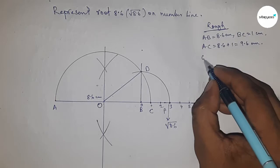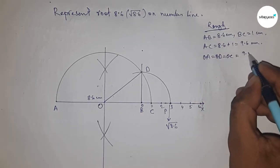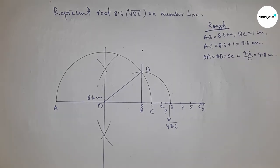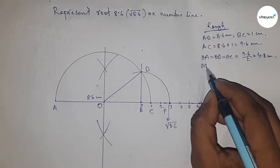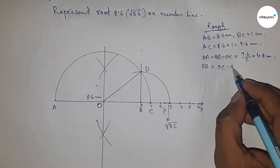The radius OC, OD, and OA equal 9.6 divided by 2, which equals 4.8 centimeters. The distance OB equals OC minus BC. Putting the values of OC and BC, this is 3.8 centimeters.